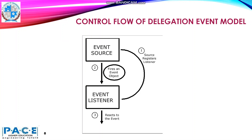From this diagram, things will be clear. For the Delegation Event Model to work, the Event Listener has to be registered with the Event Source — the source registers the listener. Once the listener is registered, this Event Listener starts waiting for any event initiated from the Event Source. When the event occurs, the Event Source creates the Event Object and fires it to the Event Listener by calling a method of the Event Listener and passing the Event Object as a parameter. On receiving the Event Object, the Event Listener handles it and reacts to the event.